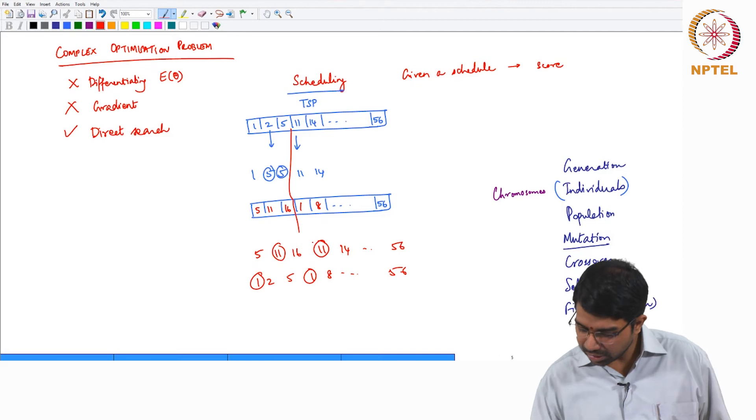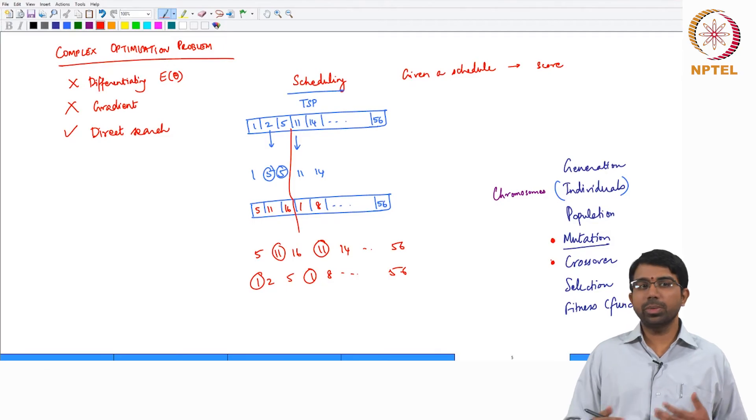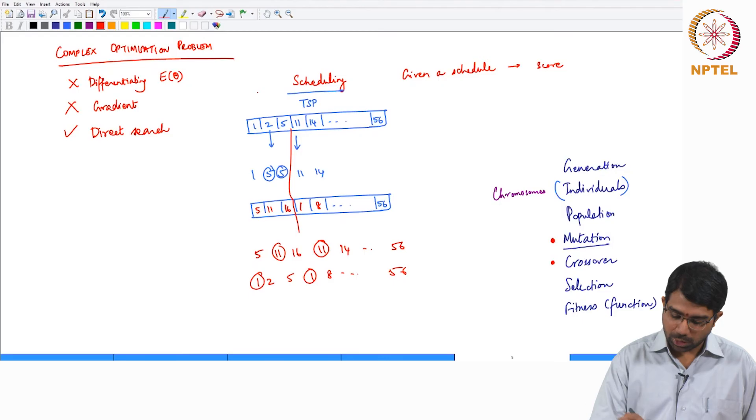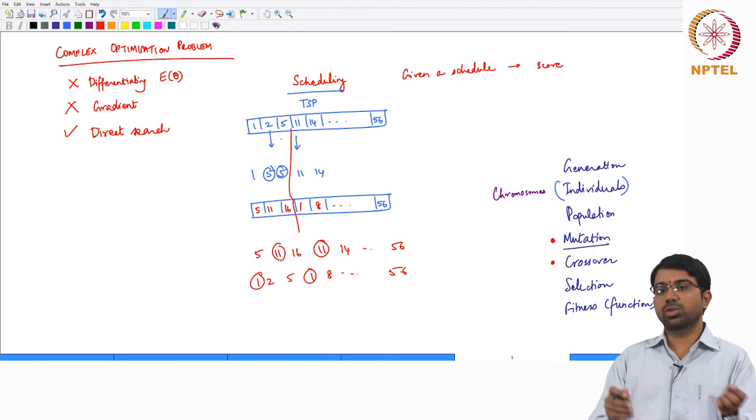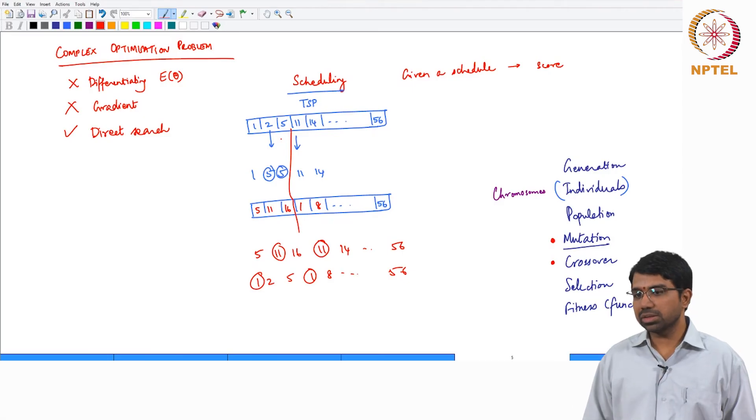So you need to essentially come up with some other equivalent operation for mutation and for crossover. What would be the equivalent operation you will have to figure out. So maybe you just want to swap - you want to pick two matches and swap them, pick two cities or pick two delivery points and swap them. There are different things that you can do.